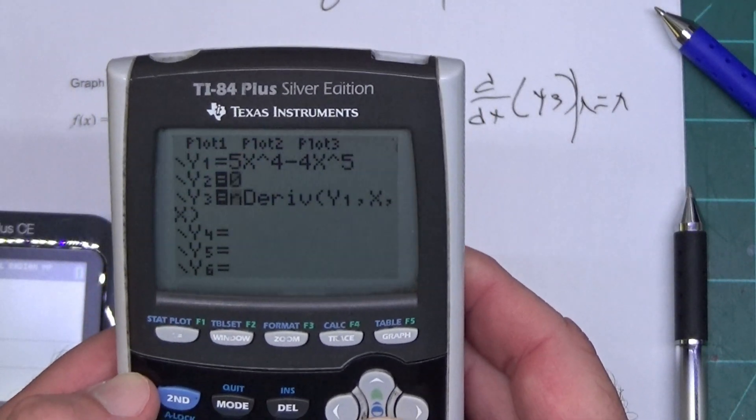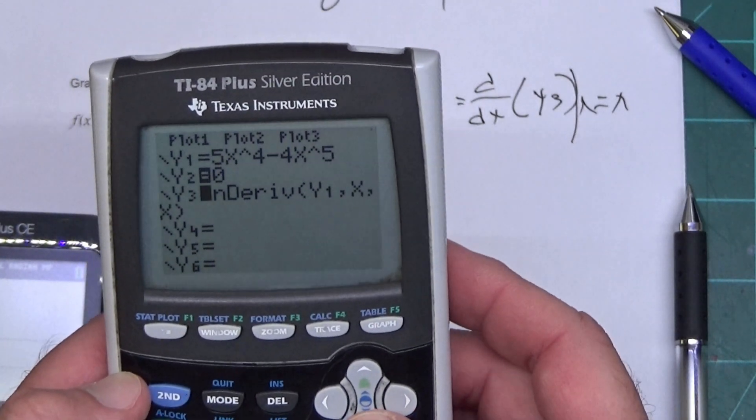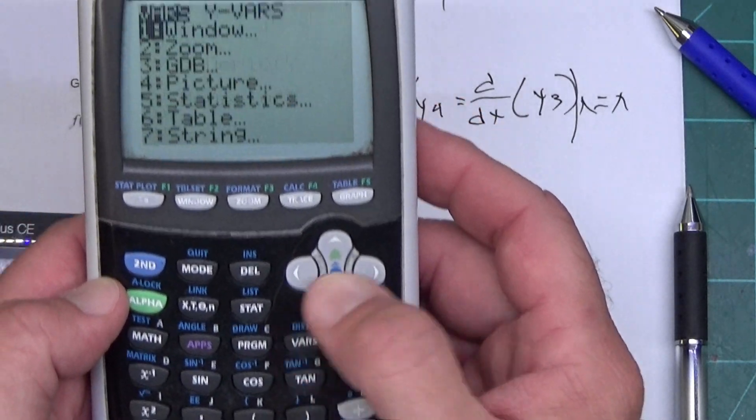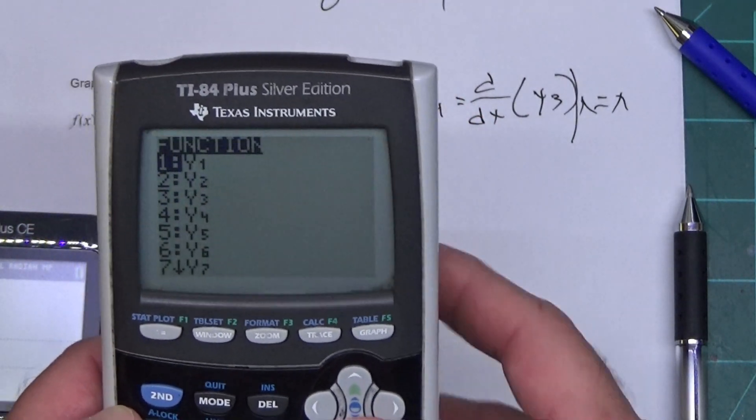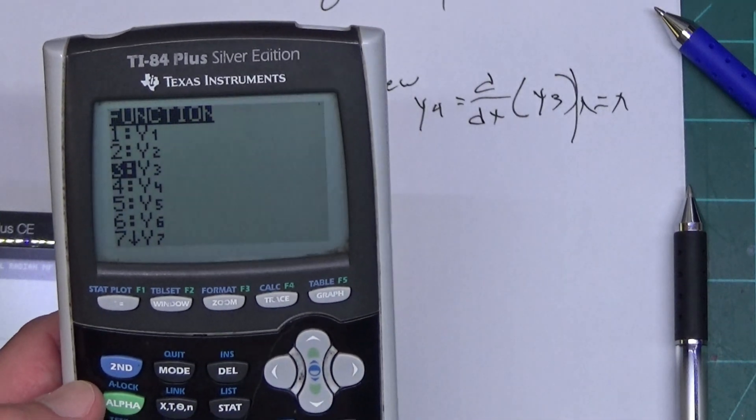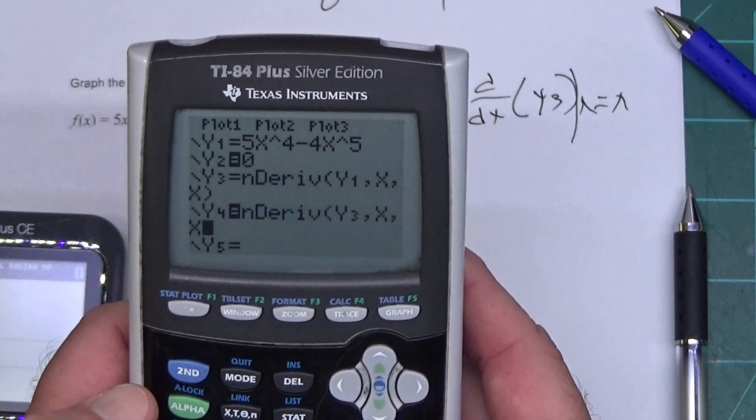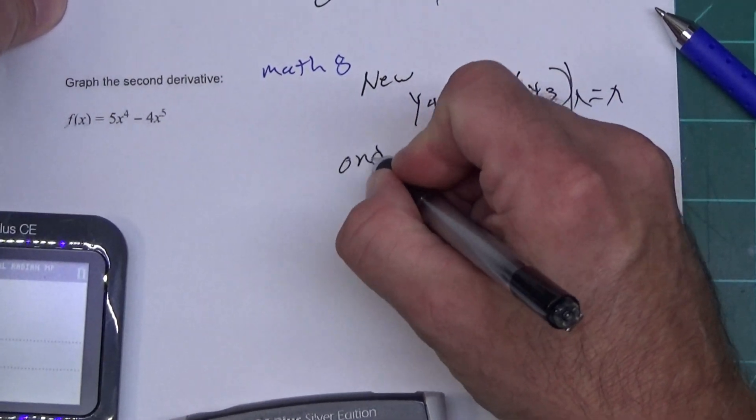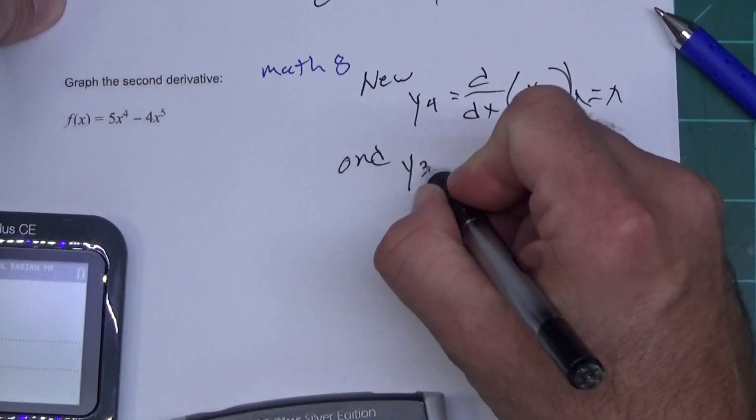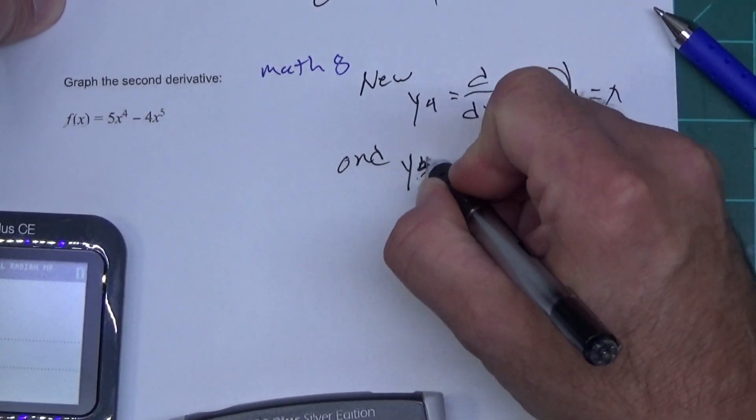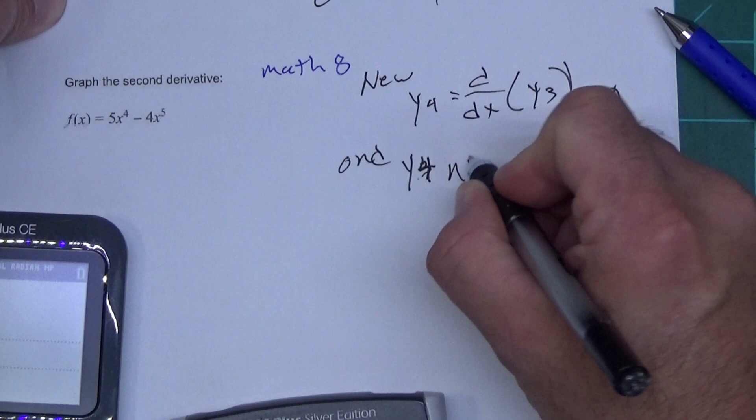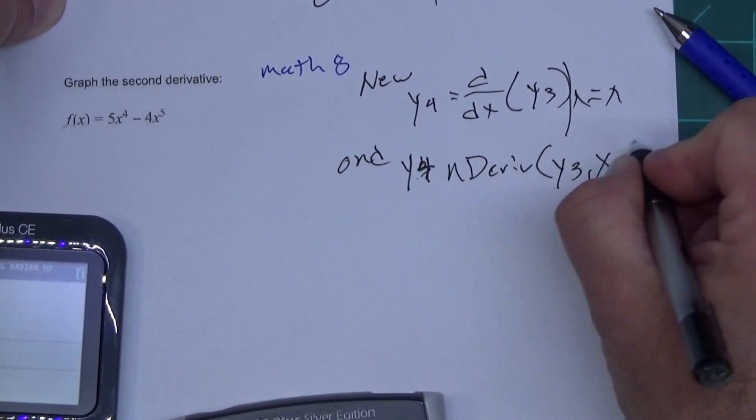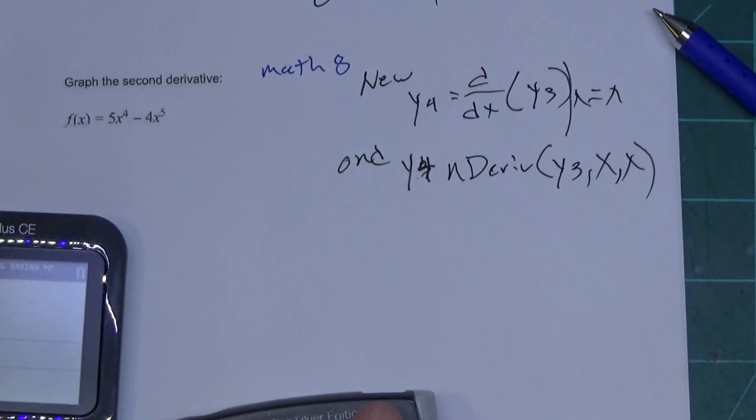Same thing on this one. It's just going to look different. I'm going to turn off that derivative by pressing Enter on the equal sign. Come down here and press Math 8. This time I press VARS, go over to YVARS. I go down to number 3 and press Enter. And then I put comma X comma X close parentheses. And this one's set up to graph the second derivative. So let me write this down. Some Y4. Wrong. Y4. We put nDeriv Y3 comma X comma X. There we go. We have the calculator set up.